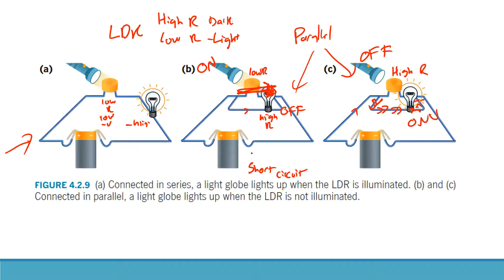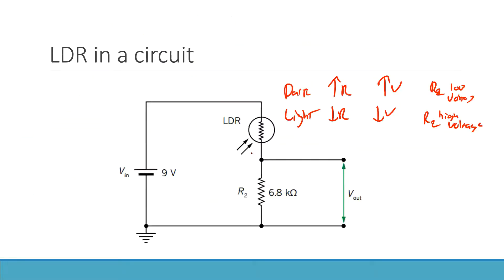What I want you to understand is this isn't specifically new material — it's just applying the idea of path of least resistance to actual circuits. A technique I use when taking notes: rather than writing 'low voltage' or 'high voltage,' I draw arrows. If resistance goes up, voltage goes up, current goes down — arrows make this much clearer and faster when working through these problems.